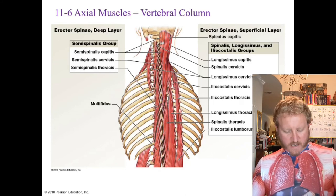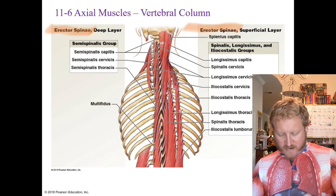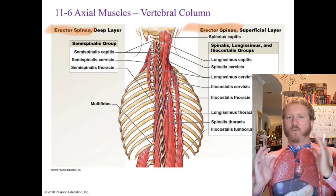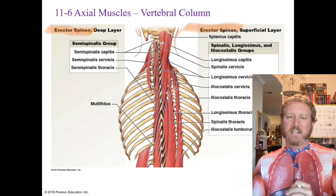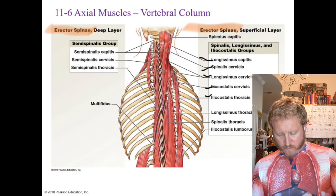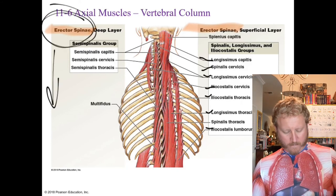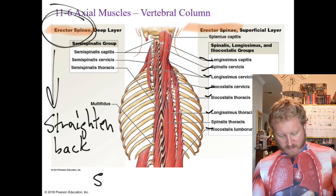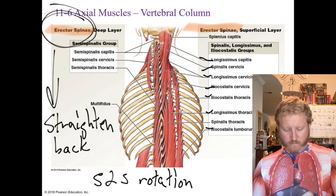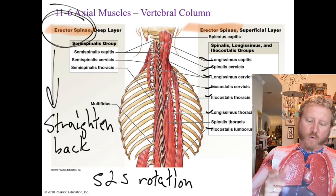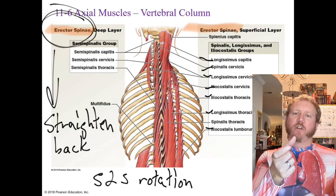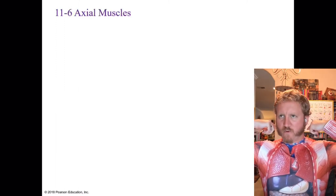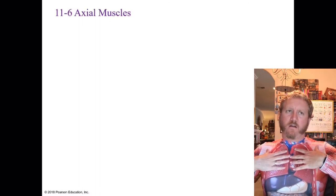Muscles of the vertebral column include the erector spinae group — both superficial and deep muscles whose function is to strengthen the back and allow side-to-side rotation. You don't need to know the specific muscles within the group, just what the group does overall: straighten the back and allow side-to-side rotation.